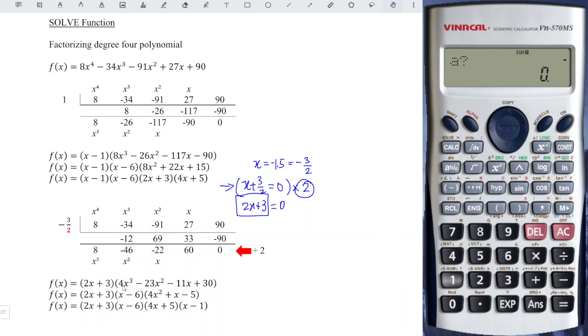And a is the coefficient of x cubed, which is 4 for this case. And b, negative 23. C, negative 11. And D, negative 30.